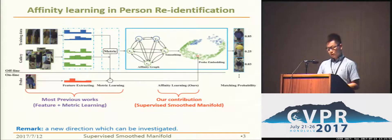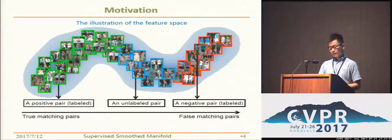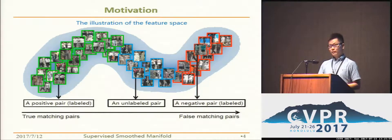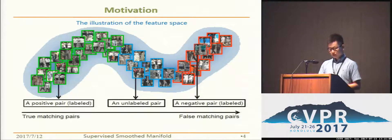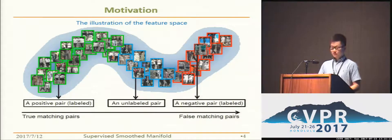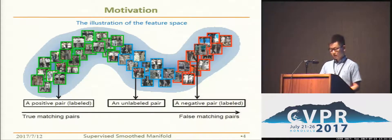We think that the image pairs reside on a smooth manifold structure. If an unlabeled pair is closer to the positive pairs in the feature space, it tends to be a true positive, and vice versa. Such an observation motivates us that affinity learning can be done by propagating the pairwise constraint labels on image pairs.